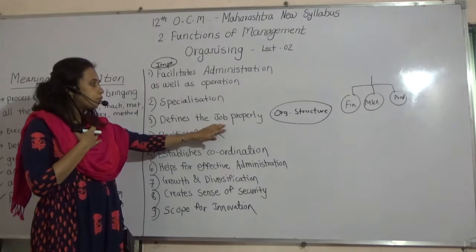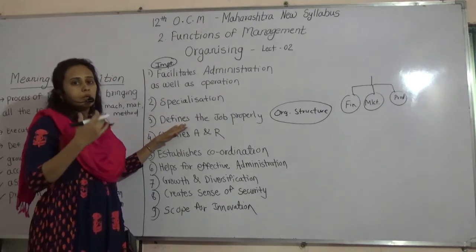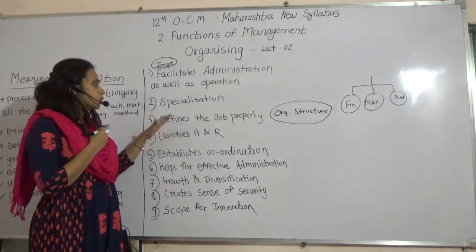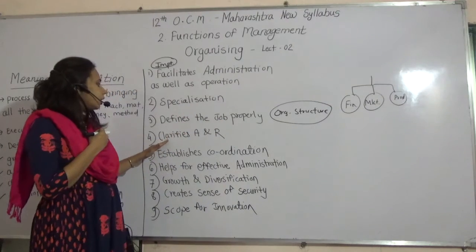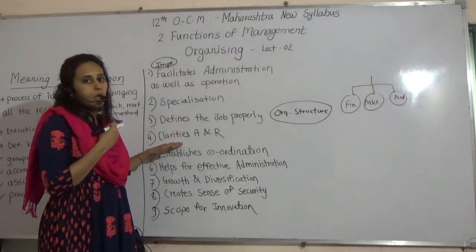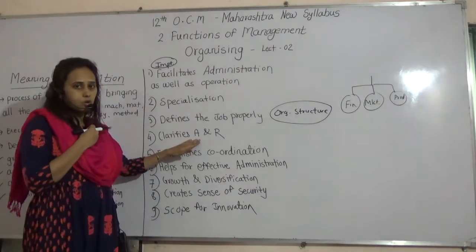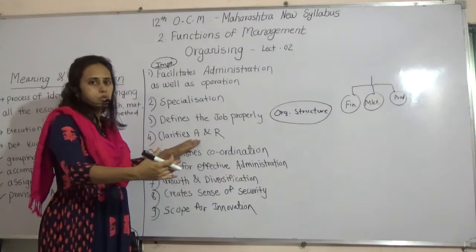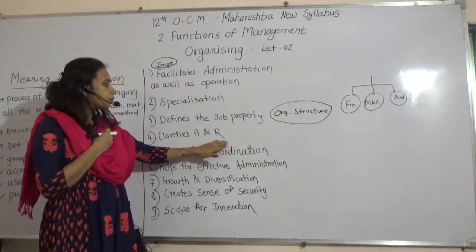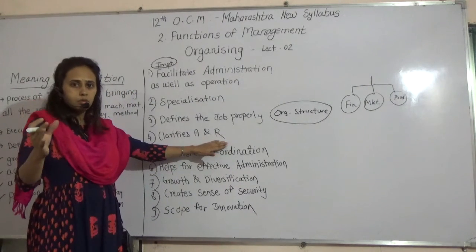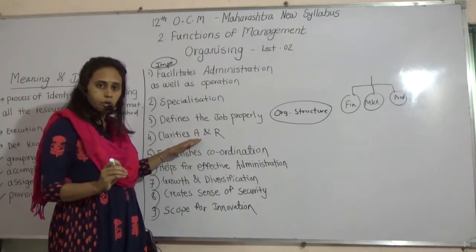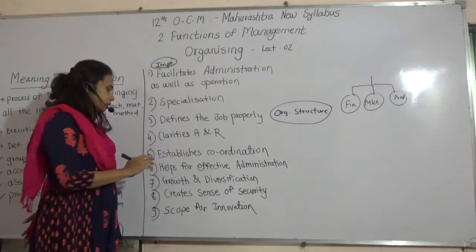For example, my role is to teach students economics and OCM — so I know my responsibility. It defines the job properly and clarifies the authority and responsibility. The person should know their authority in the organization. For example, if a student misbehaves, you should know your authority and responsibility. You should be aware of both authority and responsibility.